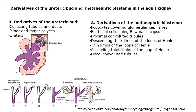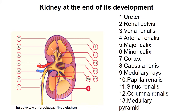From the metanephrogenic blastema develop: podocytes, epithelial lining of Bowman's capsule, proximal convoluted tubules, descending thick limbs of the loop of Henle, thin limbs of the loop of Henle, ascending thick limbs of the loop of Henle, and distal convoluted tubules. This development is clearly visible in the picture, and the kidney at the end of its development contains all its main structures.